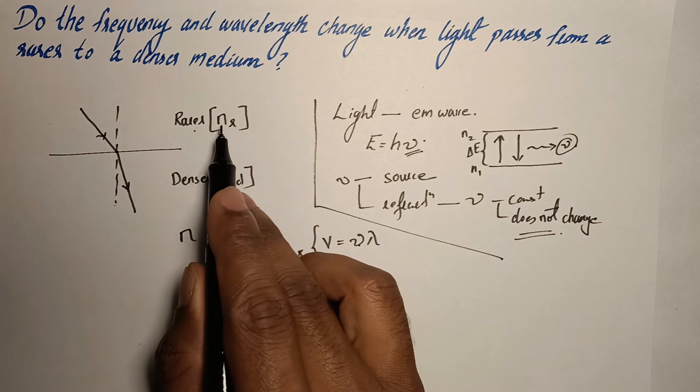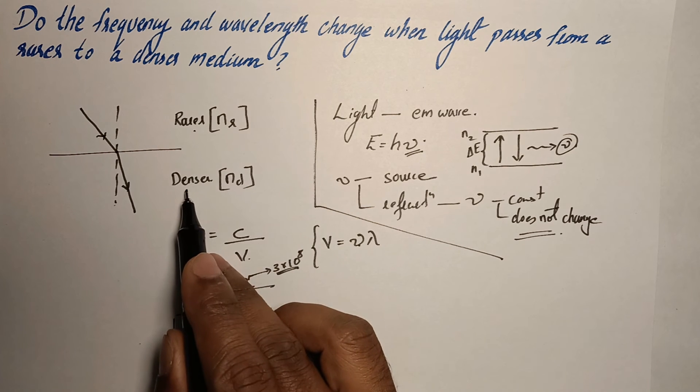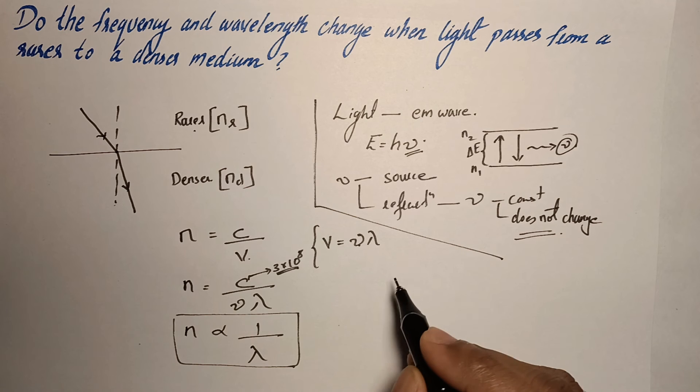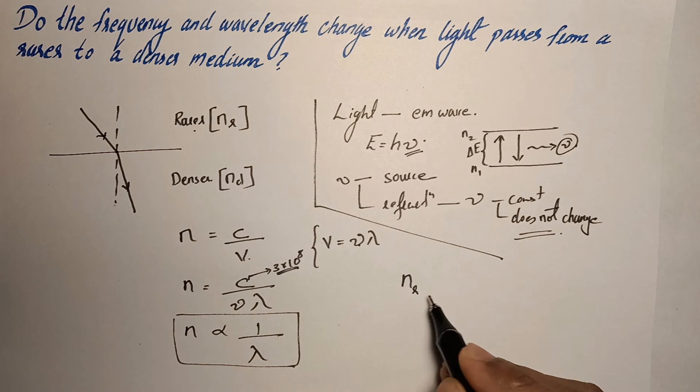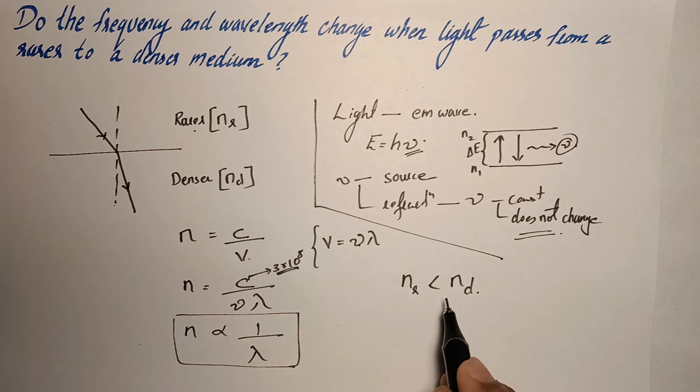So we know that rarer medium have a less refractive index and the denser medium have a higher value of refractive index. So refractive index of the rarer medium is less than refractive index of the denser medium. Since they are inversely proportional, refractive index and wavelength is inversely proportional.